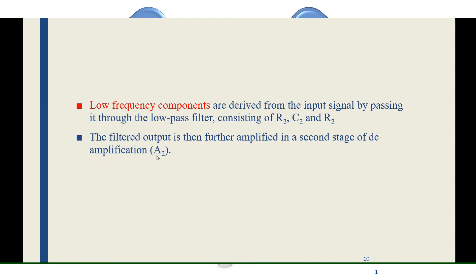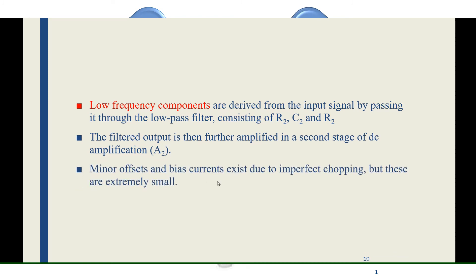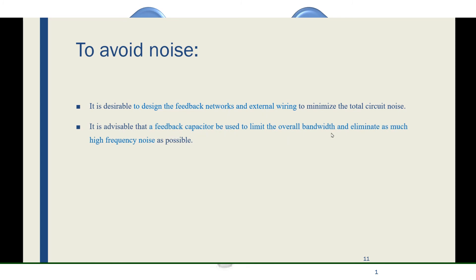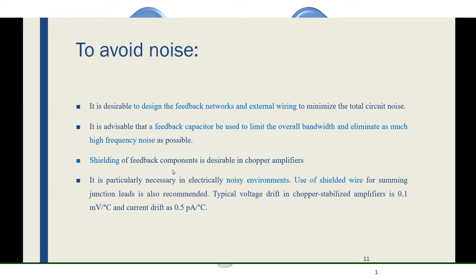After filtering, the signal passes to the DC amplifier. This signal may have some minor offsets and bias current. If the chopping device is not working properly — called imperfect chopping — the offset will be extremely small. To avoid such noise, we can use a switch-driving oscillator built into the module, feedback networks, and external wiring. A feedback capacitor can also be used to limit the overall bandwidth and reduce noise. Additionally, shielding can be used in the circuit and wiring to protect the system and signal from a noisy environment.